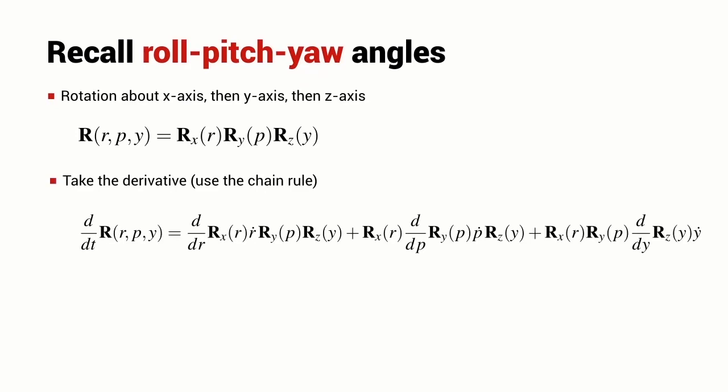Now, we could take the derivative of this expression and we obtain a relationship for the rate of change of the rotation matrix in terms of some elementary rotation matrices, the derivatives of some elementary rotation matrices, and the derivative of the roll angle, pitch angle, and yaw angle, which are here denoted by ṙ, ṗ, and ẏ respectively.